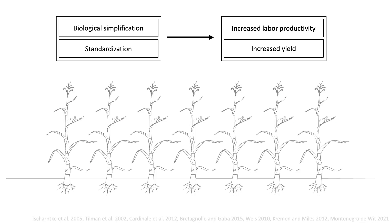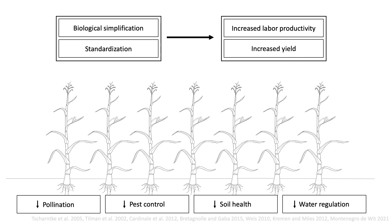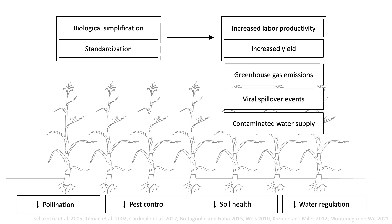The simplification and standardization of agricultural landscapes can support increased yield, but these processes pose some major problems. First, they undermine biodiversity and erode the ecosystem functions that diverse plants and animals provide, increasing farmer dependence on off-farm inputs. Second, the industrialization of agriculture leads to consequences, or externalities, that extend far beyond crop fields. Some of these externalities include greenhouse gas emissions, viral spillover events, contaminated water supply, exploitation of workers, and, ironically, food insecurity.